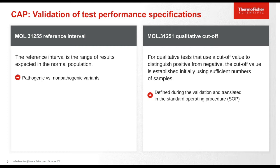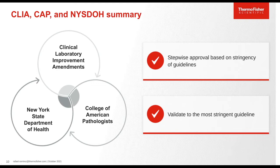As a recap of all accrediting organizations discussed today, it is a stepwise approval based on the stringency of guidelines: CLIA is at the bottom, then the College of American Pathologists, followed by New York State being one of the most stringent.